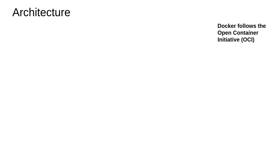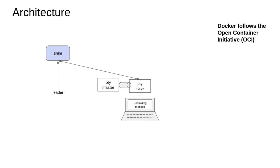To start with, we've understood what a PTY slave and PTY master are. There's a shim process that gets started as a session leader — you understand that term now from our earlier discussion on process groups, sessions, and terminals. The shim starts as a leader with control over the controlling terminal. Once shim starts, the next important thing it does is fork itself and create something called shim daemon.